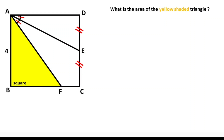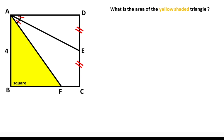In this video we have one square with one side given as four units. These two parts are given as equal and these two angles are also given as equal. The question is: what is the area of the yellow shaded triangle? First of all, we know that this side is four units, therefore these two parts must each be equal to two units.